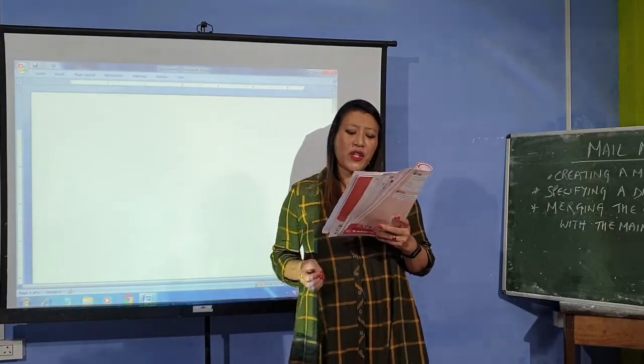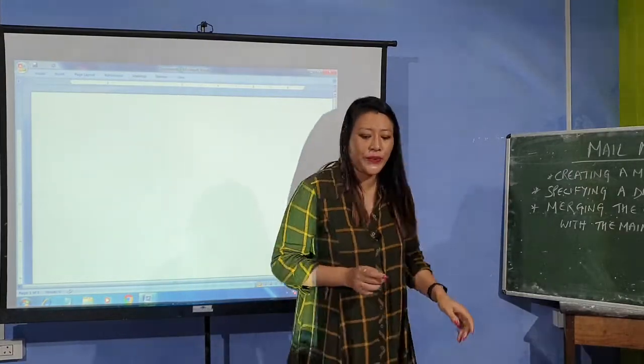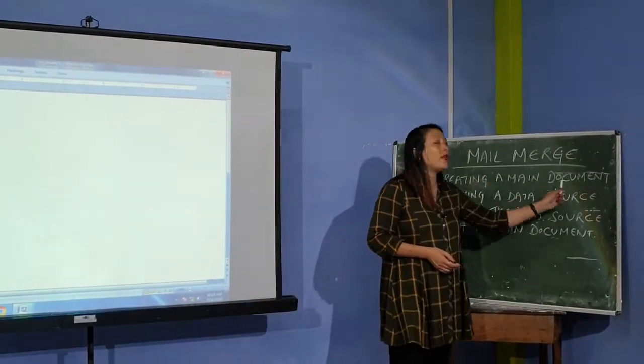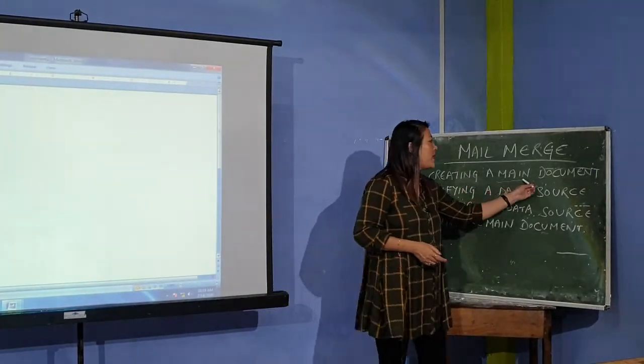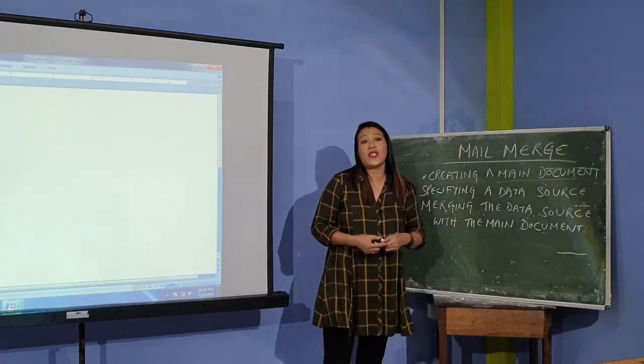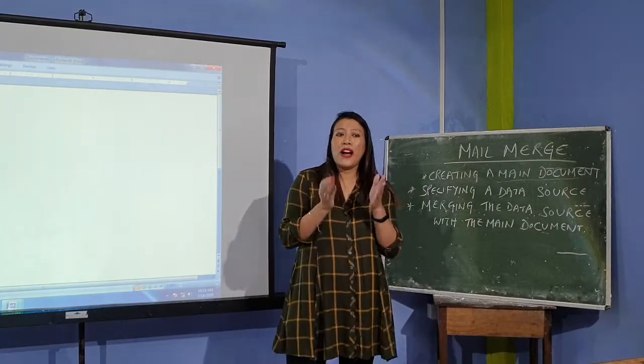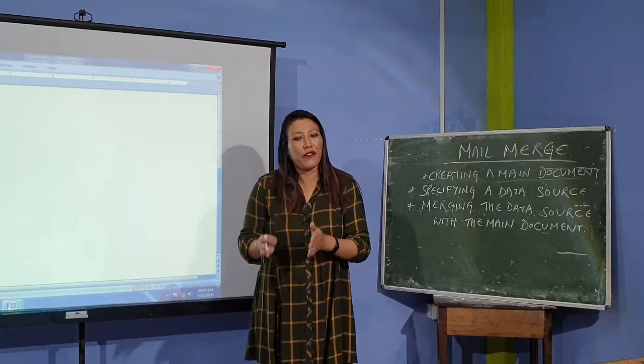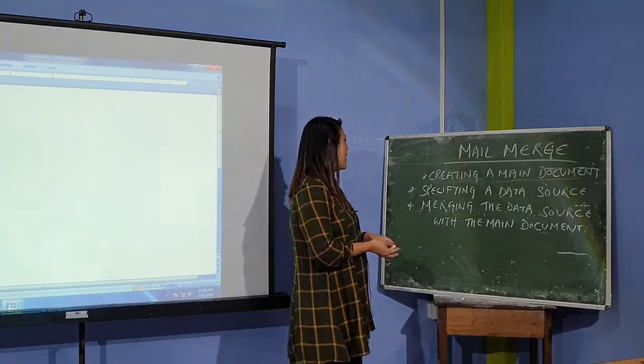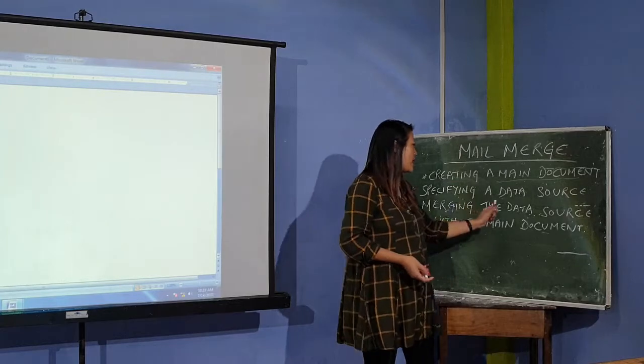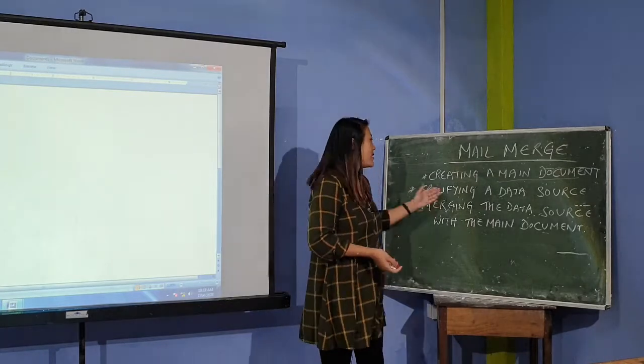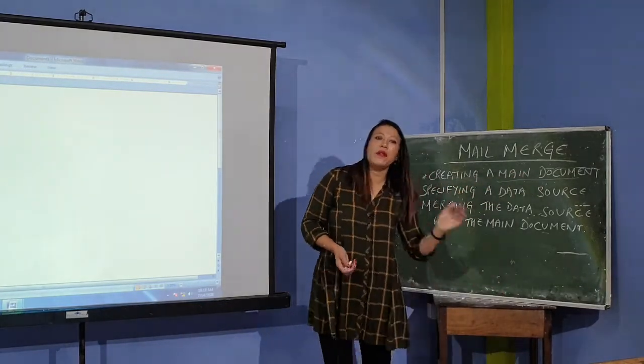So like Mail Merge features is used to combine a data source with the main document. As I told you, in Mail Merge, what you have to do is, the first thing is that you have to create the main document. You have to create a main document, main document means letter, the content, that is very, very important. Next one is specifying a data source. Specifying data source means you have to mention the name, address, telephone number of the people or the person or your relatives who are going to get or receive this letter. And after you finish creating this tool, you have to merge the data source with the main document. When you merge this tool, then you will get the same content, you can send the same letter to number of people at a time.